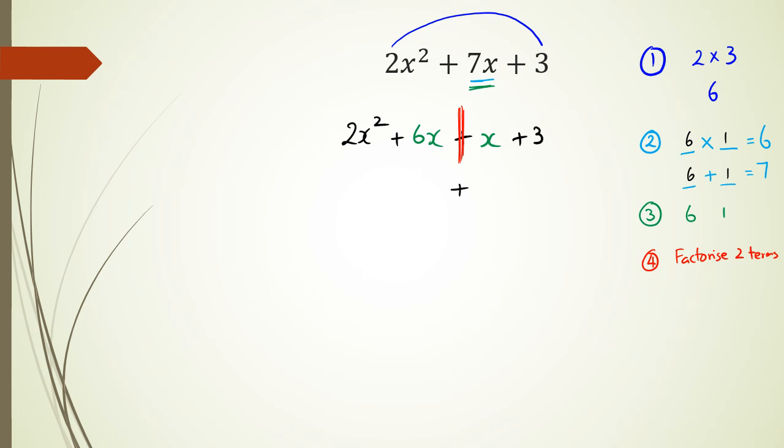So if I was to factorize this, on this side here, I've got 2x squared plus 6x, and I want to factorize it. So if I want to factorize it, I'm going to get 2x times x plus 3.